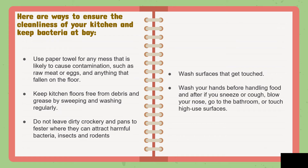Number ten: wash surfaces that are frequently touched — like door knobs of the comfort room. After using the CR, you touch the doorknob and then go to the kitchen. Make sure to wash your hands. Number eleven: wash your hands before handling food and after if you sneeze or cough, blow your nose, go to the bathroom, or touch high-use surfaces. Make sure your hands are clean, especially now during the pandemic — always wash hands and use alcohol.